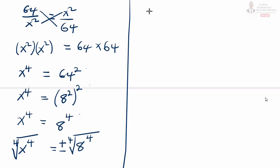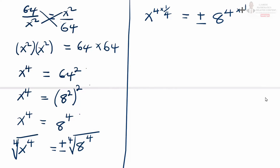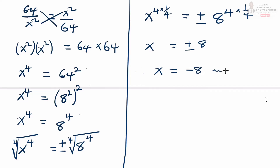From here, on the left hand side, we have x raised to power 4. The fourth root is the same as multiplying by a quarter, or 1 out of 4, equals plus or minus 8 raised to power 4 multiplied by a quarter. On the left hand side, x raised to power 1 equals plus or minus 8 raised to power 1. Therefore, the values of x are x equals negative 8 and x equals positive 8.